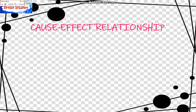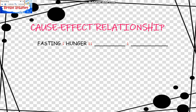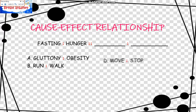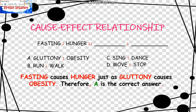The next relationship is the Cause and Effect Relationship. The example is: Fasting is to Hunger as blank is to blank. The choices are: Gluttony is to Obesity; Run is to Walk; Move is to Stop; and Sing is to Dance. Fasting causes Hunger just as Gluttony causes Obesity. Therefore, A is the correct answer.